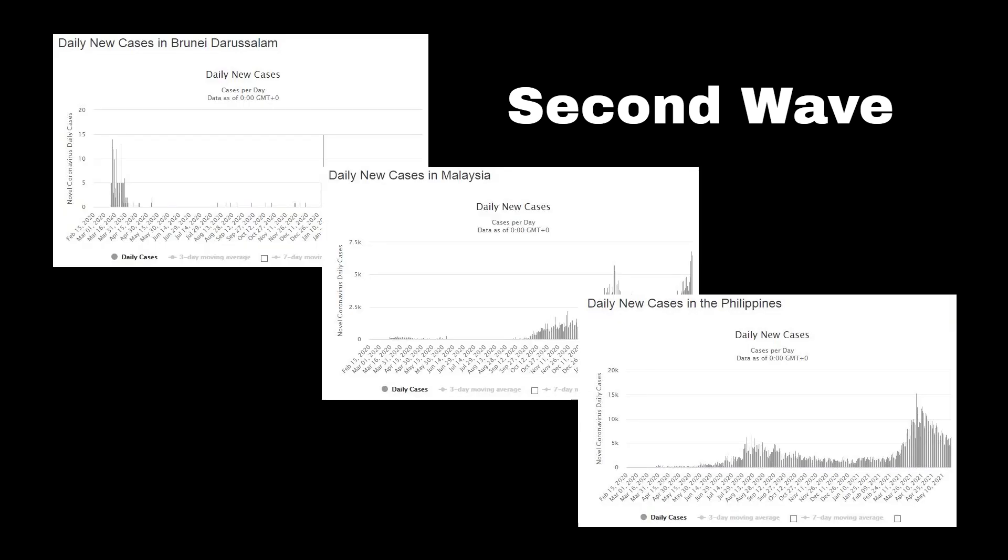Among countries in Majapahit's Nusantara, Brunei Darussalam, Malaysia, and Philippines have also experienced the second wave. While Brunei's second wave reached about the same level as in the first one, Malaysia experienced 50% higher in the second wave, and Philippines set three times as many as in the first wave.